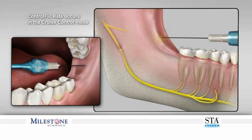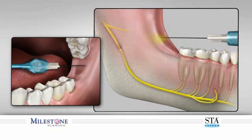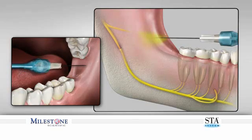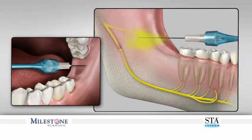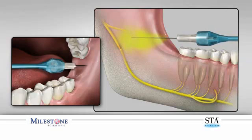The technique of creating an anesthetic pathway requires a very slow and deliberate needle movement, allowing the anesthetic solution to precede the path that the needle will take. Slowly advance the STA handpiece and simultaneously rotate it using a back and forth motion. This is called the birotational insertion technique, and it will minimize needle deflection, resulting in more accurate placement of the needle tip to the intended target.